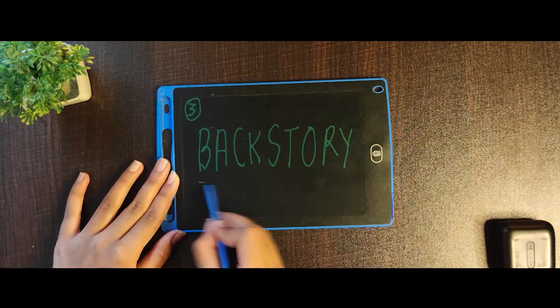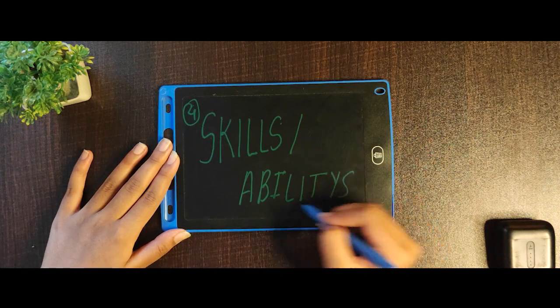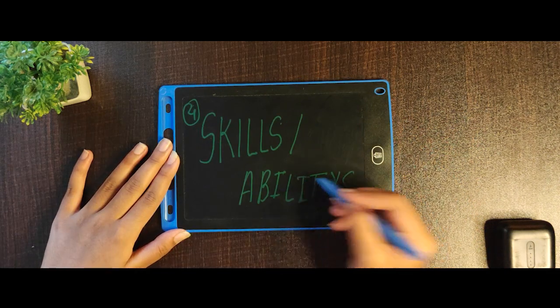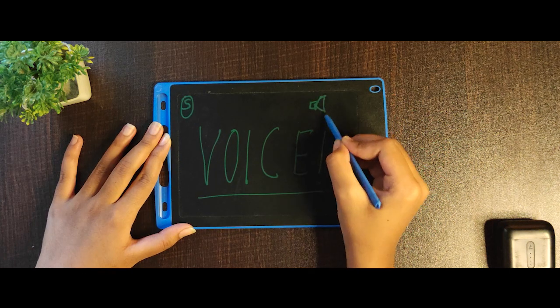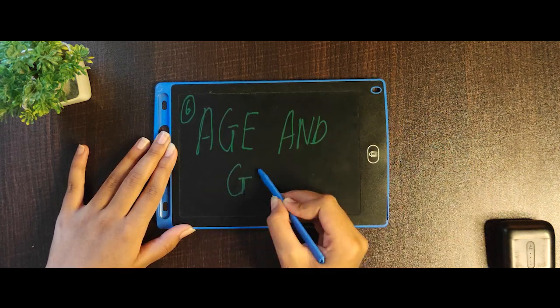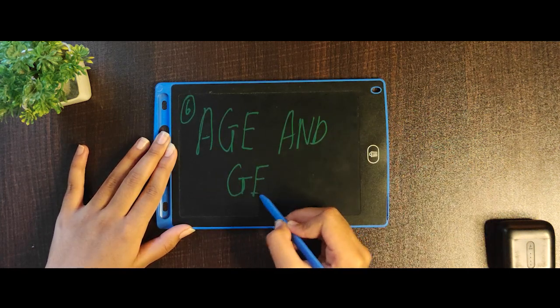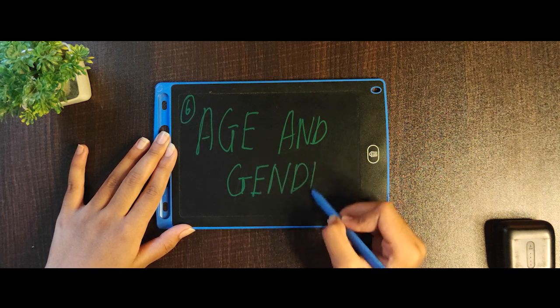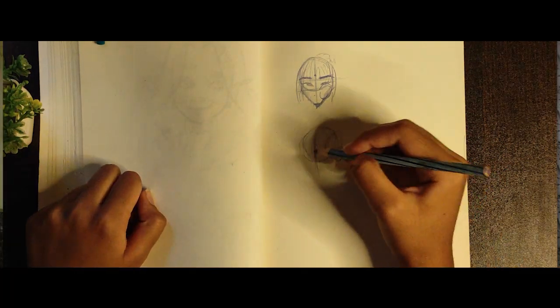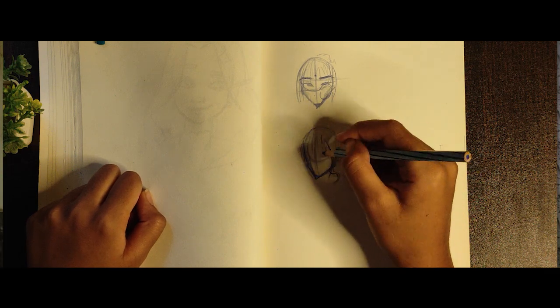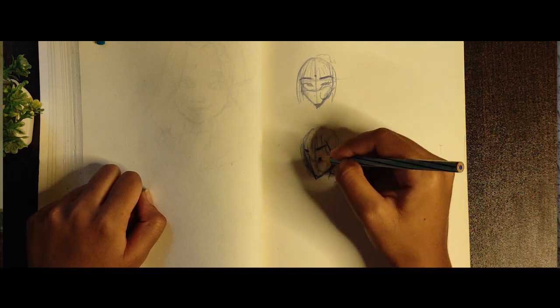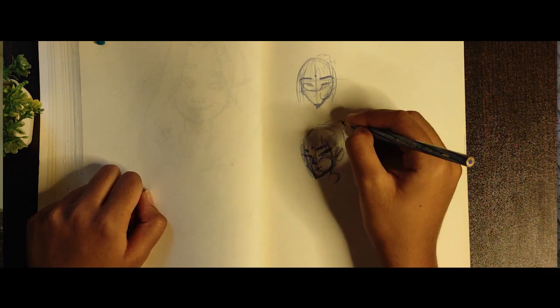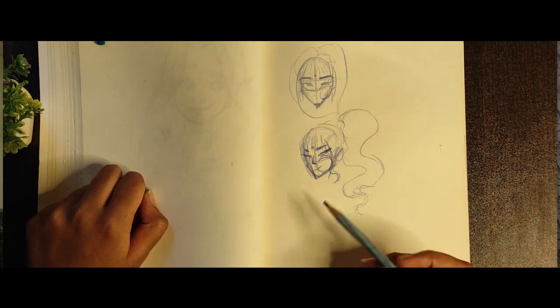backstory, skills and abilities, voice, age, and gender. Just go over all the ideas that are coming in your mind and start sketching — keep sketching and sketching and sketching. Don't stop at this part because after the first or second idea you will get a proper idea which will be unique and have your own style.